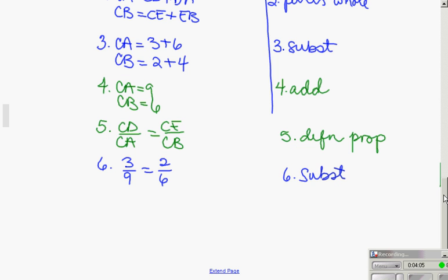Two more steps. We'll call this done. I need my angle. Angle C is equal to angle C. That is by reflexive. Remember when we have overlapping or shared pieces, we use reflexive.